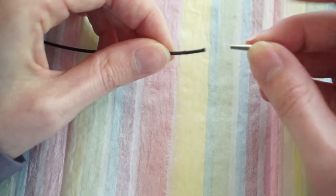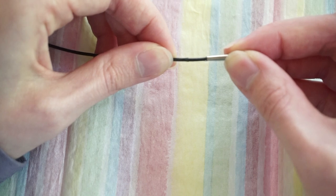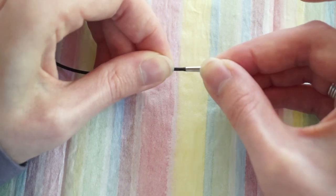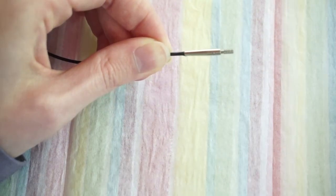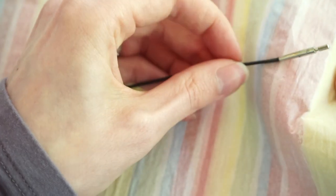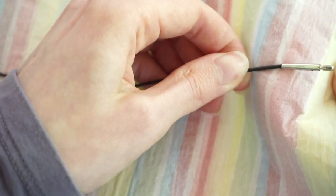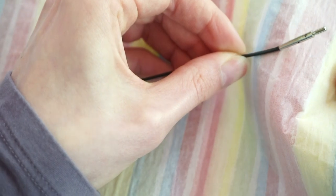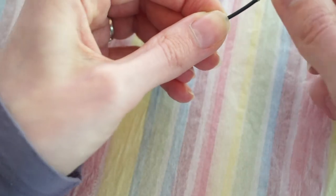And then real quick before anything starts drying, I'm just going to give the cord a little twist just to make sure there's no clumps of glue. And then again make sure it's pushed down all the way.